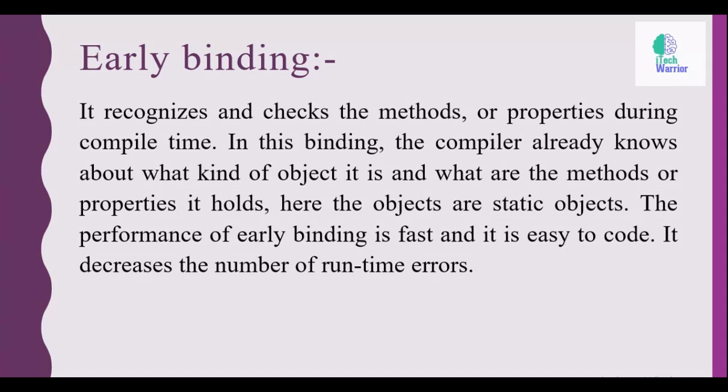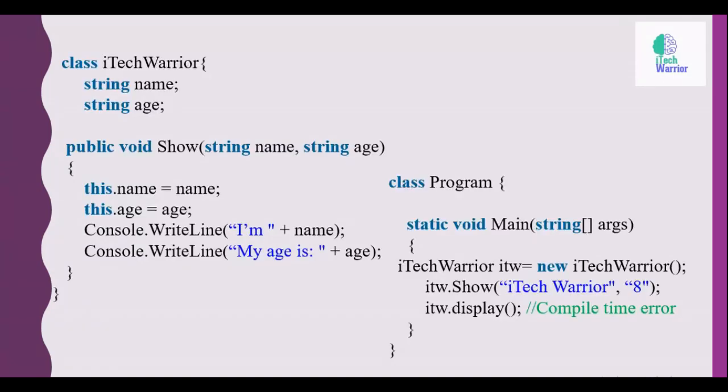And here is the example of early binding. Class iTechWarrior, and inside the class we declare two properties: name and age.